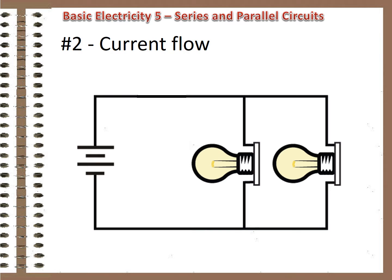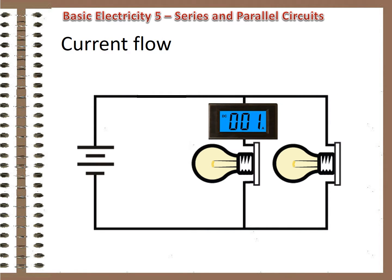Current flow is also a bit different. Instead of being the same everywhere, it varies through each leg depending on the resistance of that leg, Ohm's law at work. So measuring current here shows only what flows in that leg, but measuring here shows the total for all the legs.